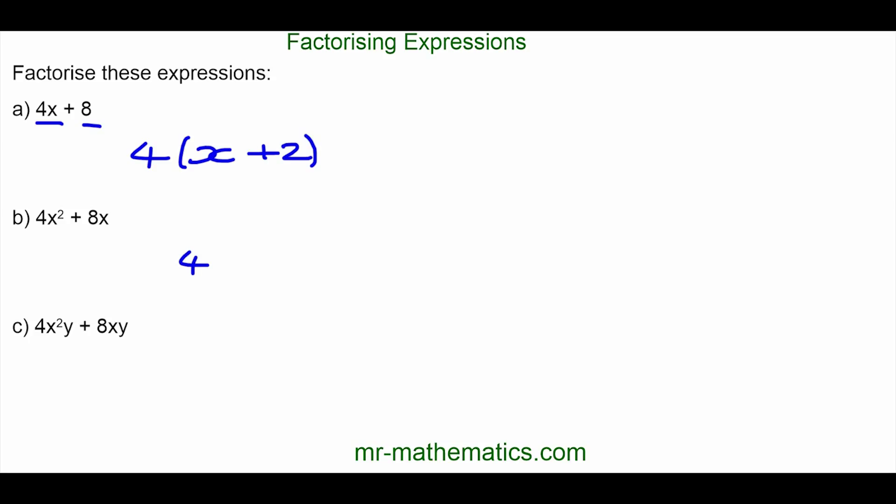In the next question, 4 is still common, but this time x is common to both as well. So, 4x is the highest common factor of both terms. 4x multiplied by x makes 4x squared and 4x multiplied by 2 makes 8x.